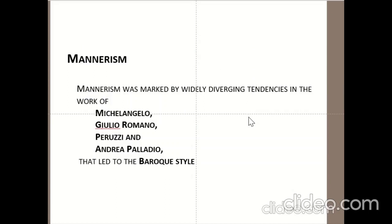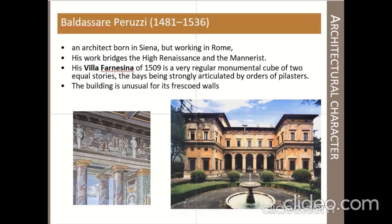Mannerism was marked by widely diverging tendencies in the work of Michelangelo, Romano, Perruzzi, and Andrea Palladio, that led to the Baroque style. Perruzzi, an architect born in Siena but working in Rome, bridges the High Renaissance and the Mannerist. He designed Villa Farnesina in 1509 as a very regular monumental cube of two equal stories, with bays strongly articulated by orders of pilasters — two stories with all elements of High Renaissance used in an unusual way. The use of frescoes on the building characterizes it as a Mannerist building.